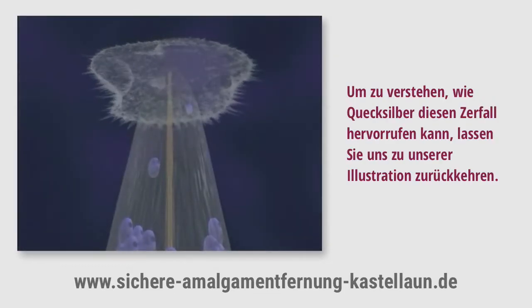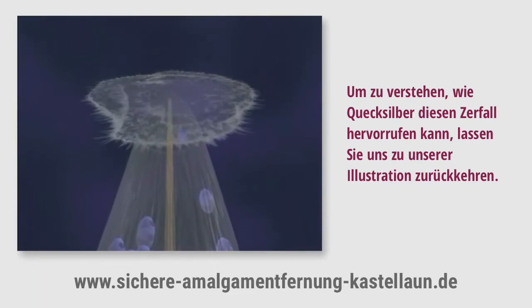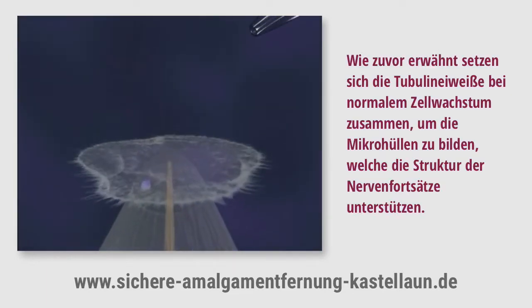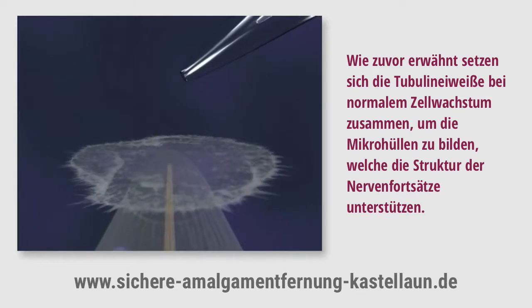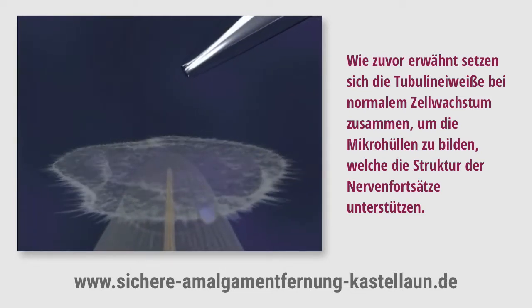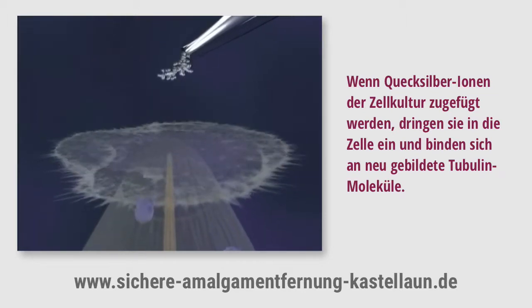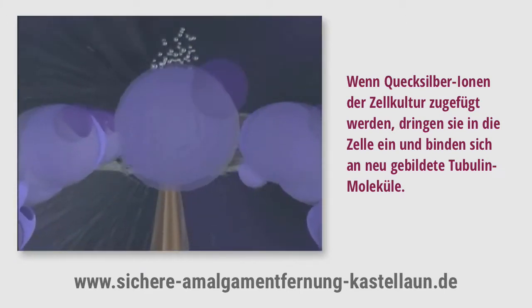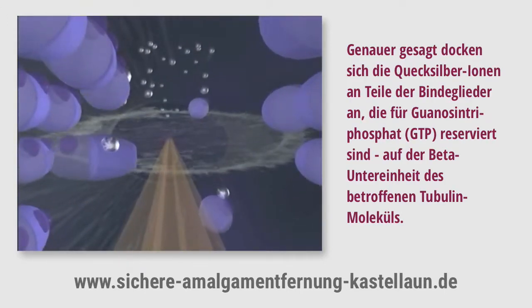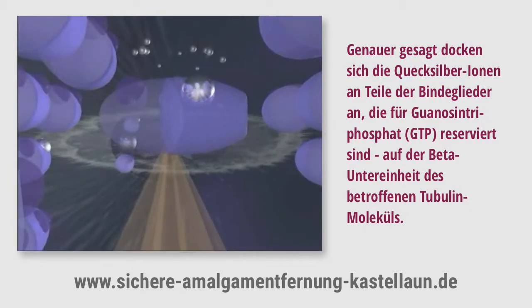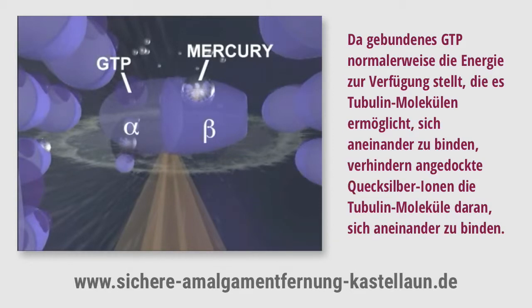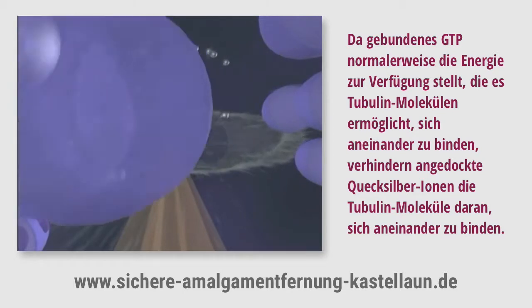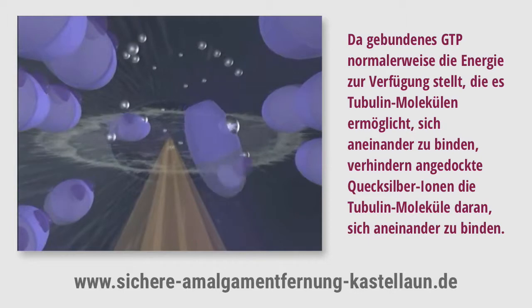To understand how mercury causes this degeneration, let us return to our illustration. As mentioned before, tubulin proteins link together during normal cell growth to form the microtubules which support the neurite structure. When mercury ions are introduced into the culture medium, they infiltrate the cell and bind themselves to newly synthesized tubulin molecules — more specifically, to the binding site reserved for guanosine triphosphate, or GTP, on the beta subunit of the affected tubulin molecules. Since bound GTP normally provides the energy which allows tubulin molecules to attach to one another, mercury ions bound to these sites prevent tubulin proteins from linking together.